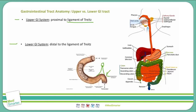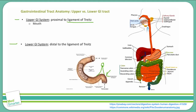There's a clinical significance to distinguishing the upper from the lower GI tract, particularly when describing the source of a GI bleed. The upper GI tract is composed of the mouth, esophagus, stomach, and parts of the duodenum that are proximal to the ligament of Treitz.